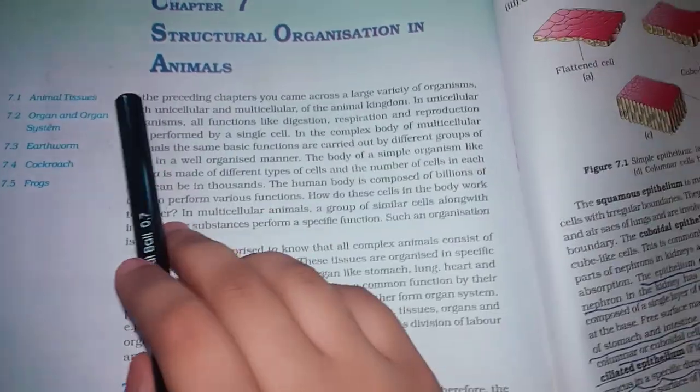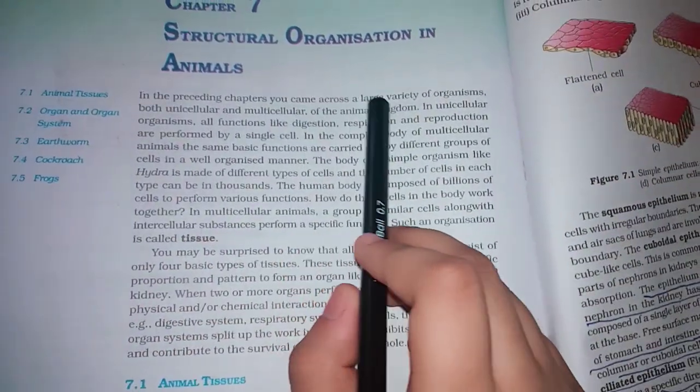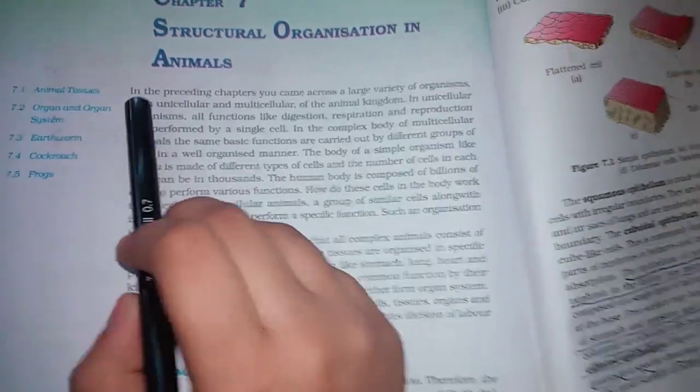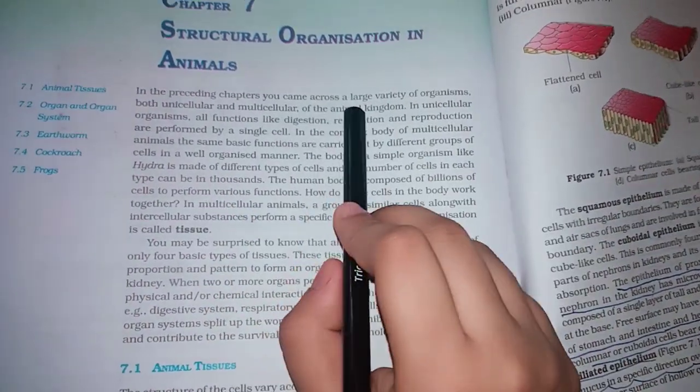Structural Organization in Animals. In the preceding chapters, you came across a large variety of organisms, both unicellular and multicellular, of the animal kingdom.